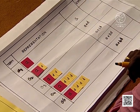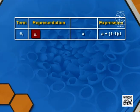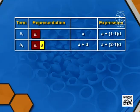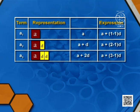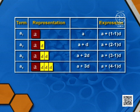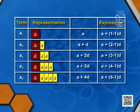Friends, what have we observed here? The first term is just A, which we can write as A plus (1 minus 1) times D. The second term is A plus (2 minus 1) times D. The third term is A plus (3 minus 1) times D. The fourth term is A plus (4 minus 1) times D, and the fifth term is A plus (5 minus 1) times D. So the sixth term would be A plus (6 minus 1) times D.